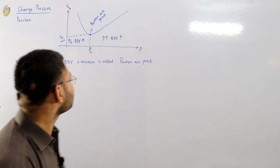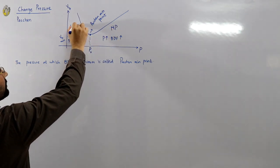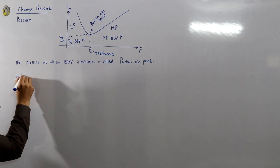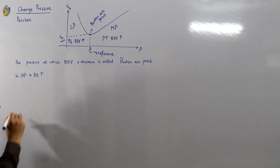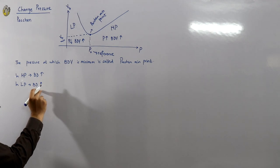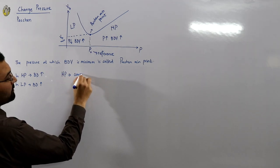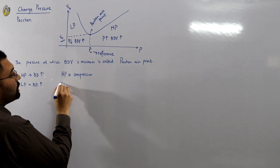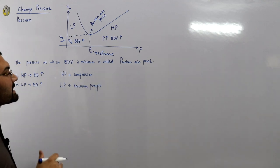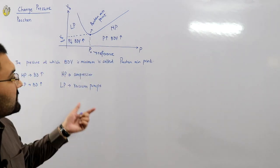The high pressure region is to the right of P-naught and the low pressure region is to the left. In the high pressure region, the breakdown voltage increases; in the low pressure region, the breakdown voltage also increases. High pressure is achieved by the use of compressor pumps. Low pressure is achieved by vacuum pumps, but vacuums are a little expensive and not that feasible.